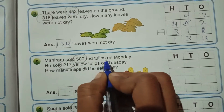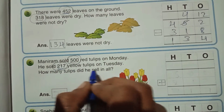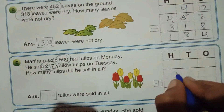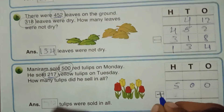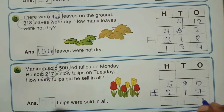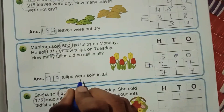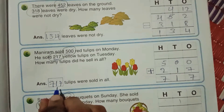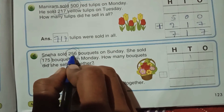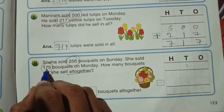Maniram sold 500 red tulips on Monday. He sold 217 yellow tulips on Monday. How many tulips did he sell in all? Total: 500 plus 217. 7 plus 0 is 7, 1 plus 0 is 1, 5 plus 2 is 7. Total 717 tulips were sold in all.